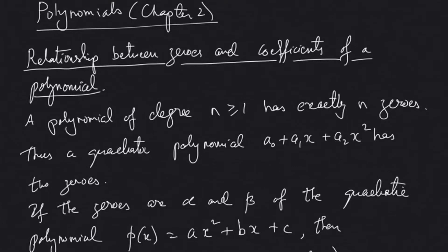In this third video today we will be studying about the relationship between zeros and coefficients of a polynomial. As mentioned earlier in the second video, we will be studying more on quadratic polynomials, which are polynomials having degree 2, as we studied in the earlier video.